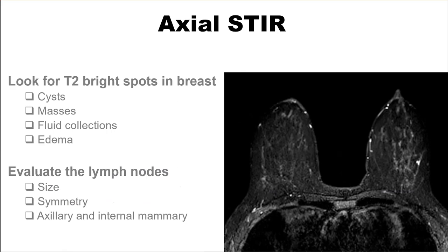On the axial STIR, you're looking for any T2-bright spots. These could be cysts, masses, fluid collections, or edema. Also, the T2-weighted or STIR images are very good for evaluating lymph nodes. Look at the size and symmetry — look in the axilla, but also in the internal mammary region.